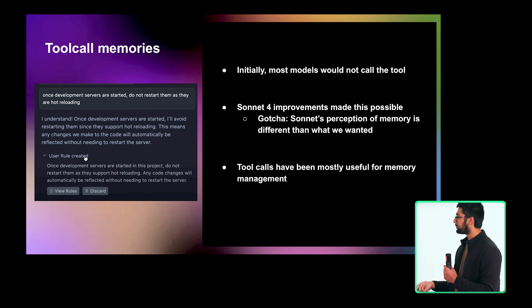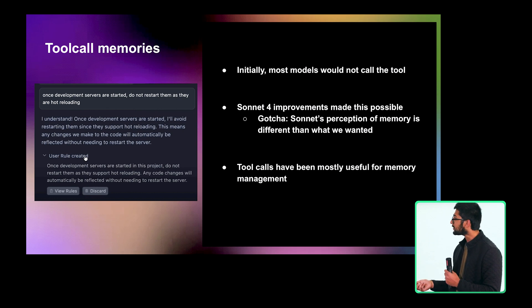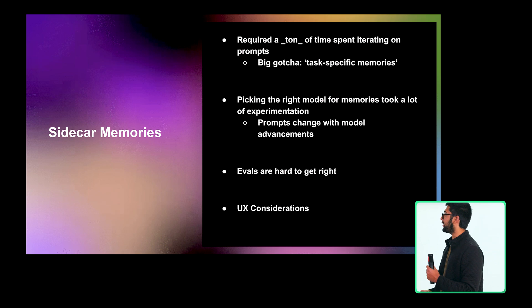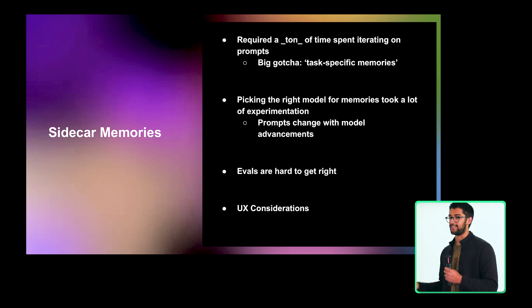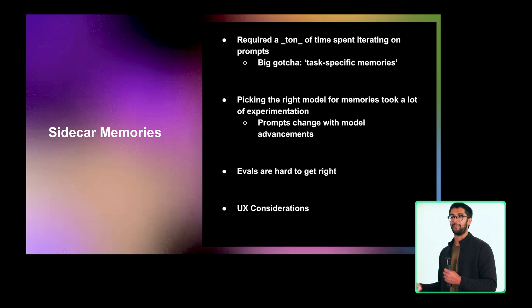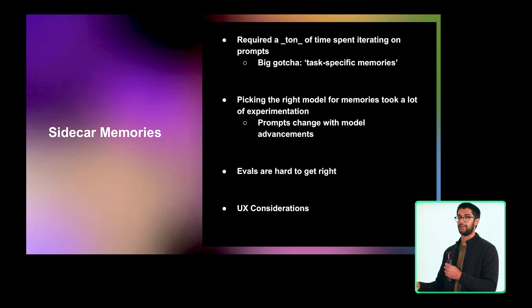We've tried to keep Sonnet 4 and Opus 4 from generating new memories, but they are still really good at reflection. So if the model has an incorrect memory and the user just in natural language expresses disagreement, they're really good at updating their memory themselves without doing anything fancy in the background. The sidecar approach required weeks of prompting iteration — a whole rollercoaster. The biggest thing I was fighting is task-specific memory, because in a coding agent interaction, probably 90-plus percent of what you're saying to the agent is not worth remembering — it's very specific to the task you've given the agent.